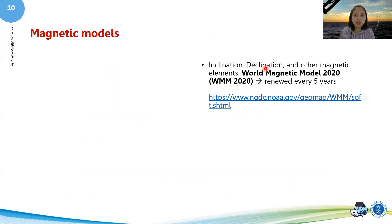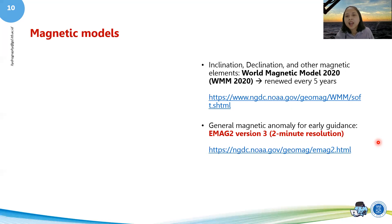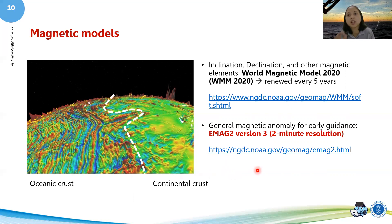Finally, magnetic models: the most important is the World Magnetic Model 2020 (WMM), which gives inclination, declination, and other magnetic elements. It is renewed every five years and is freely available. There is also the global magnetic anomaly model, useful for early guidance to delineate oceanic versus continental crust — though it has worse resolution than gravity at about two arc-minute resolution. If the magnetic signature shows stripes, it is likely oceanic crust; if it looks different, it may be continental crust.